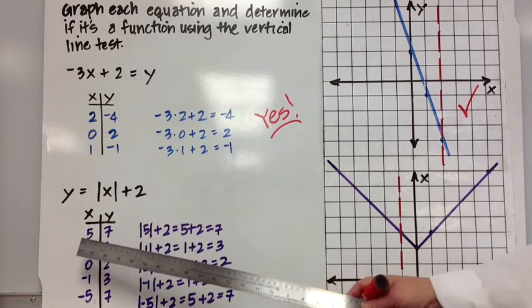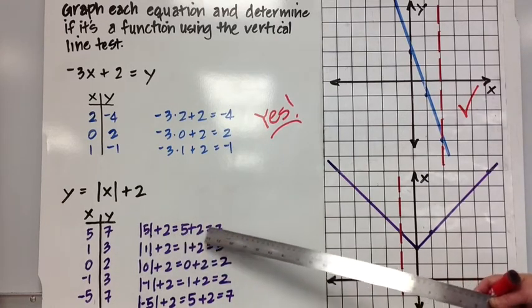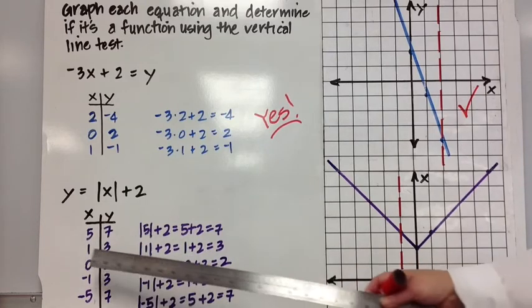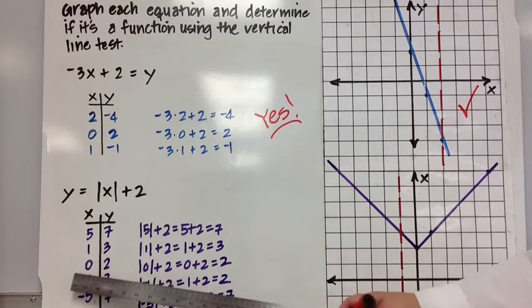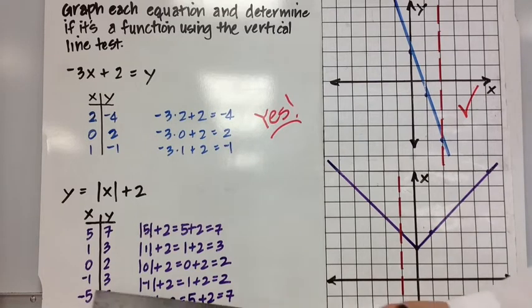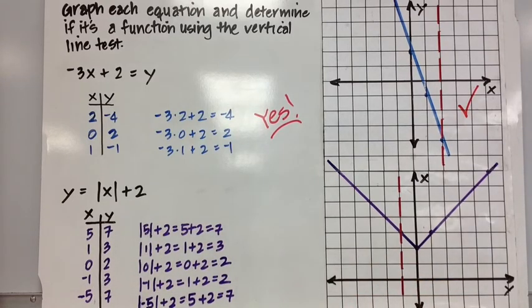When x is 5, the absolute value of 5 plus 2 equals 5 plus 2, or 7. So when x is 5, y is 7. I do the same for 1. When x is 1, y is 3. When x is 0, y is 2. When x is negative 1, y is 3. When x is negative 5, y is 7. Notice that for both 5 and negative 5, y is 7. That's interesting.